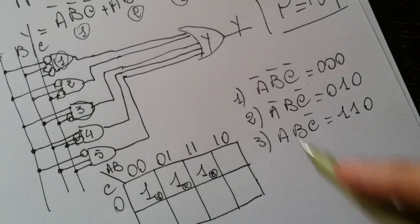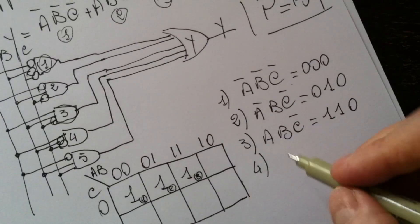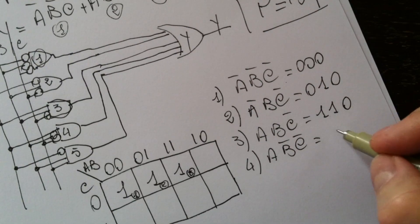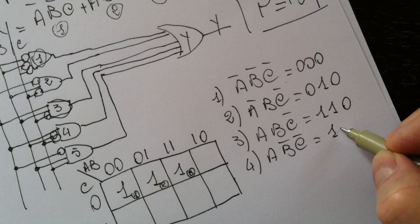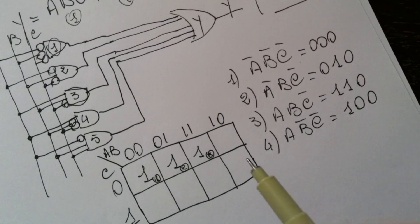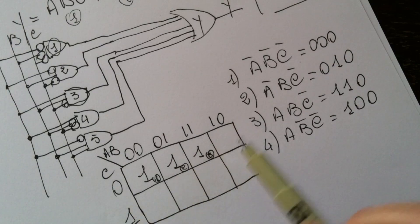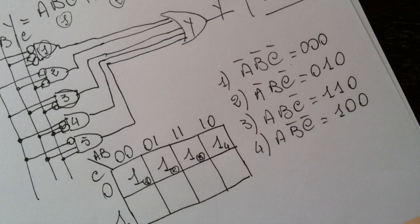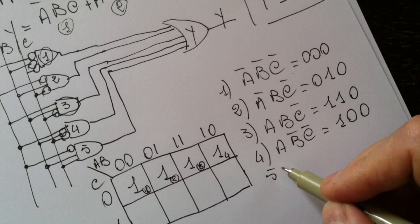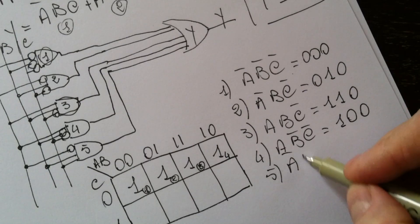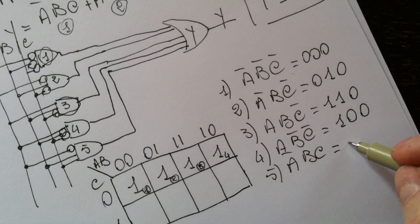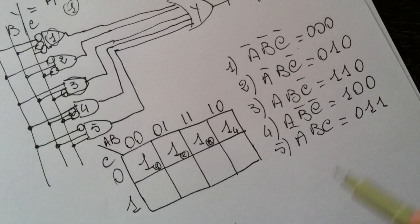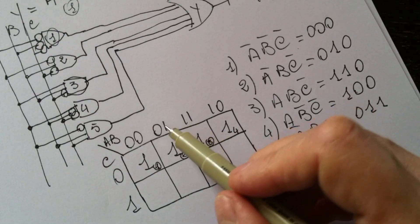For the fourth term we have A, NOT B, NOT C, so values are 1, 0, 0 — we occupy the fourth slot at A=1, B=0, C=0. For the last term, NOT A, B, and C, the values are 0, 1, 1 — so we occupy the slot at A=0, B=1, C=1.